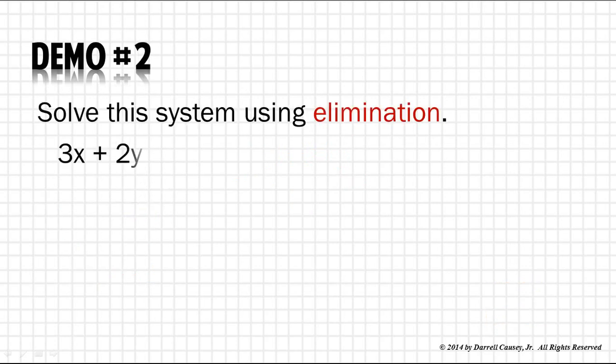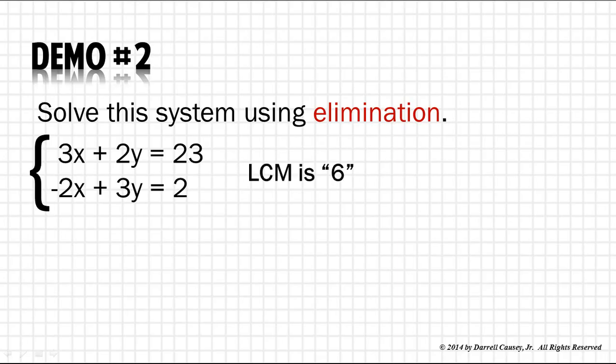We're going to solve these two linear equations using elimination. As I examine these, I note that the LCM or lowest common multiple for both x and y is 6. Let's go ahead and eliminate x. The reason I say let's eliminate x is because they're already positive negative. I don't have to do any sign changes. You could have done y if you wanted to. I just chose x.